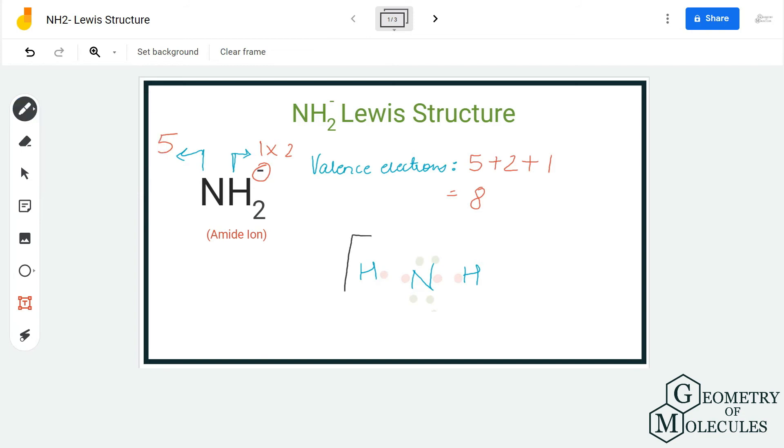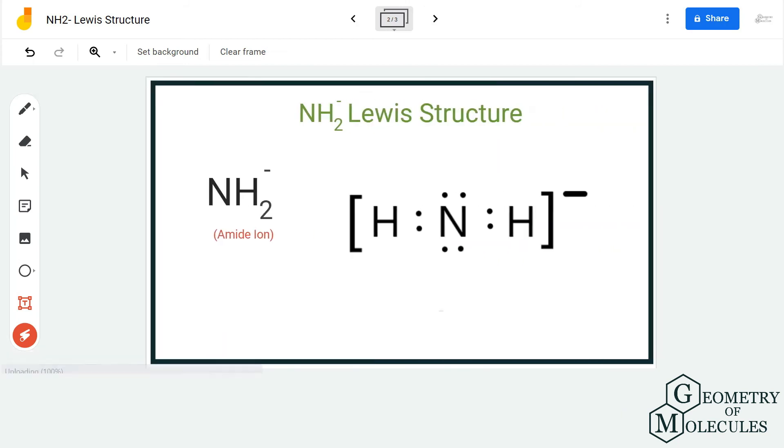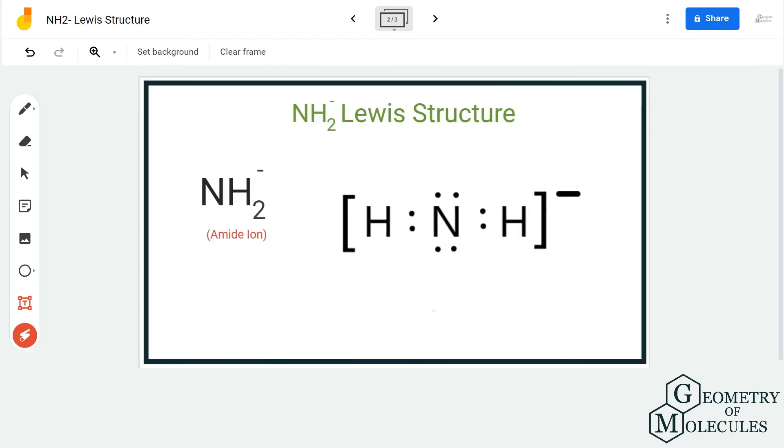As it is accepting an extra electron, we place brackets around this molecule and mention its charge. Always remember to put the Lewis structure in brackets and mention the charge when drawing a Lewis structure for an ion. An ion accepts or donates electrons and hence gets a minus or plus charge.